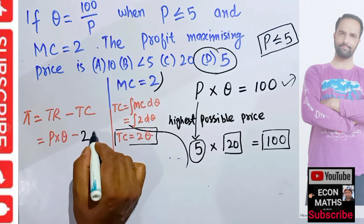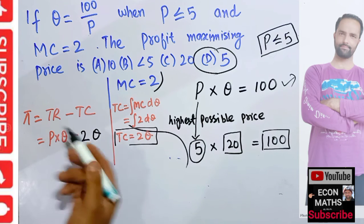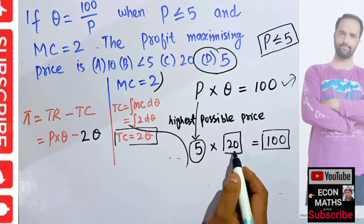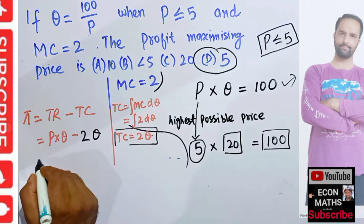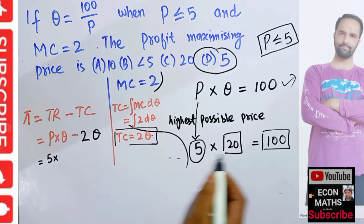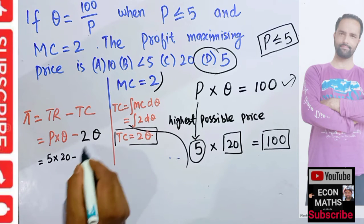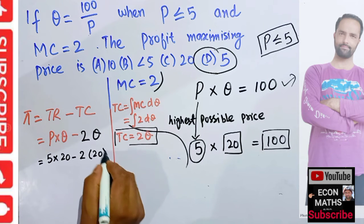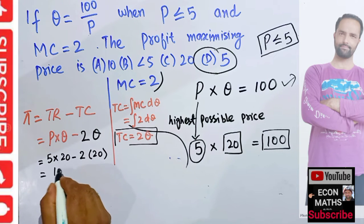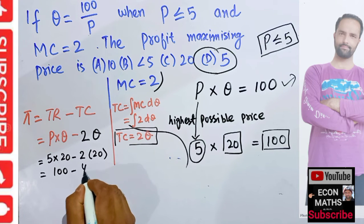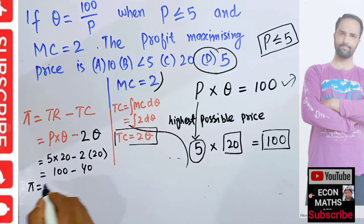When price is $5 and quantity is 20, profit equals P times Q minus 2 times Q, which is (5 × 20) minus (2 × 20). That gives us 100 minus 40, so profit equals 60.